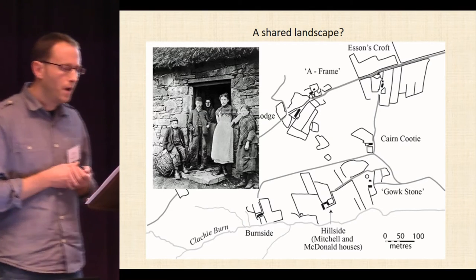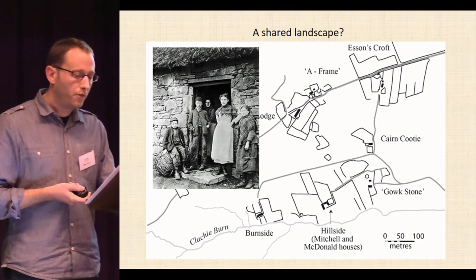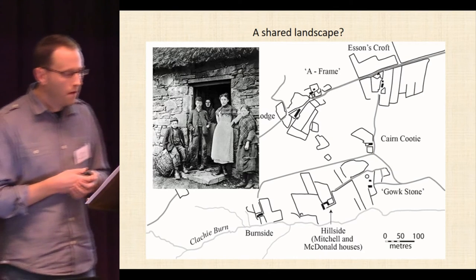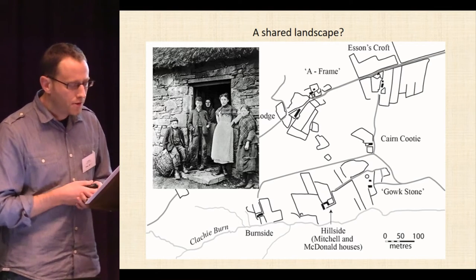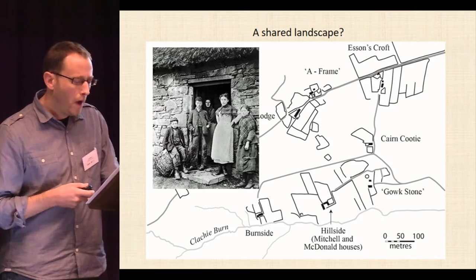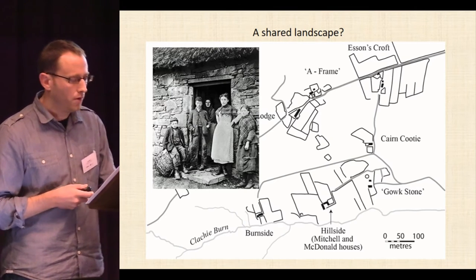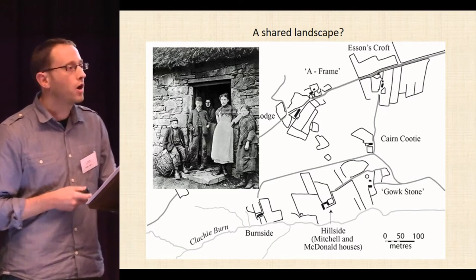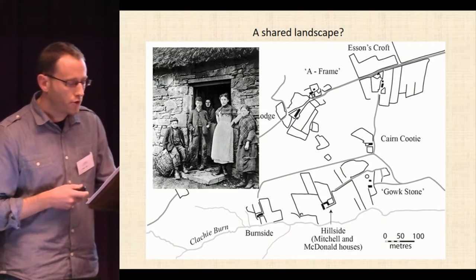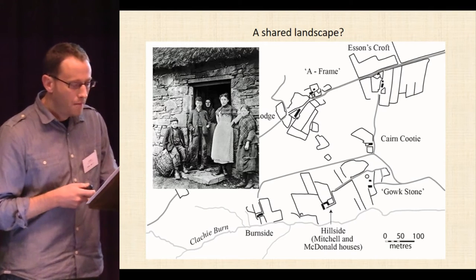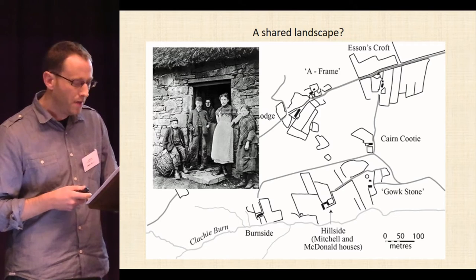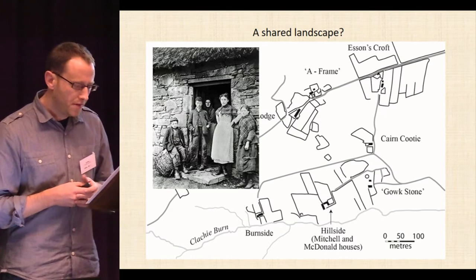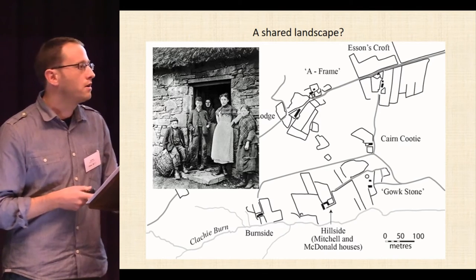Such practices were likely important not only for creating shared experience of working the land, but also in helping to forge social connections across this landscape. At the landscape scale focused on so far, it's easy to paint a relatively homogenous picture of the colony — in a way that much class-based history is also guilty. But what appears as a neatly framed image at one level of detail begins to lose some of its sharpness at another. Closer attention to the architectural history of individual crofts begins to reveal that people were caught up with notions of improvement in very different ways, pointing to an important degree of dissonance within the colony.